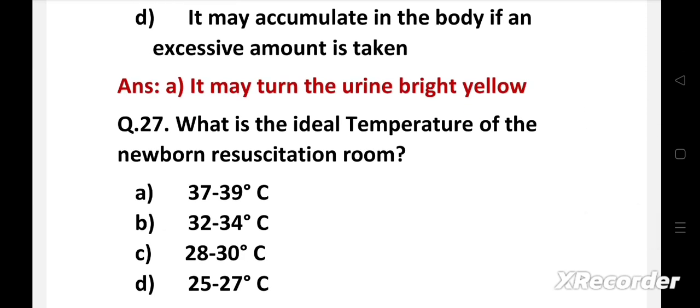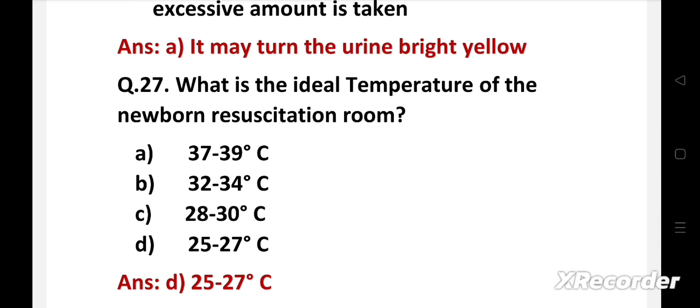Next question. What is the ideal temperature of the newborn resuscitation room? Option A: 37 to 39 degrees Celsius, B: 32 to 34 degrees Celsius, C: 28 to 30 degrees Celsius, D: 25 to 27 degrees Celsius. Right answer is option D, 25 to 27 degrees Celsius. Immediately after birth, the newborn is at high risk for hypothermia. The temperature of the delivery room should be 25 to 27 degrees Celsius and it should be free from draft of air.